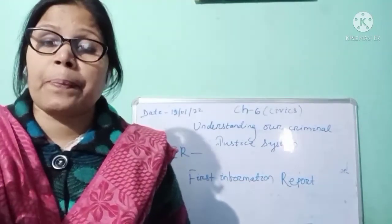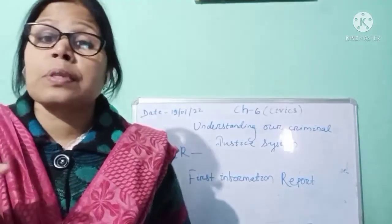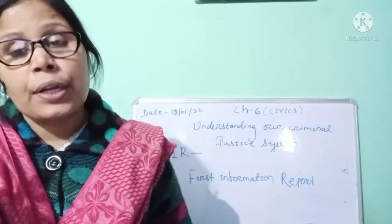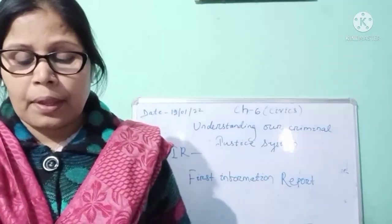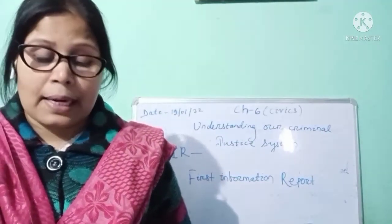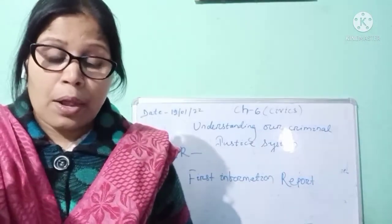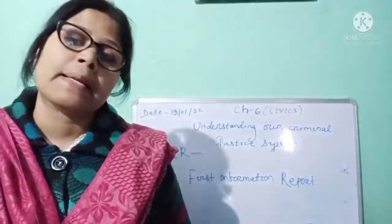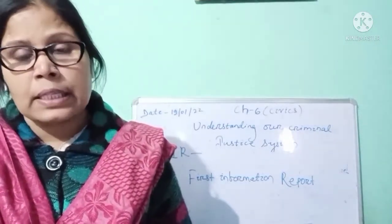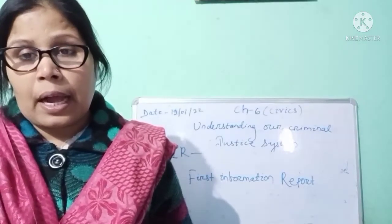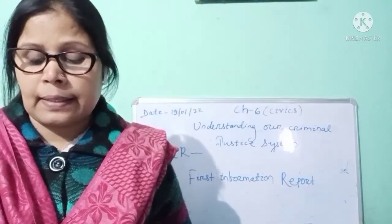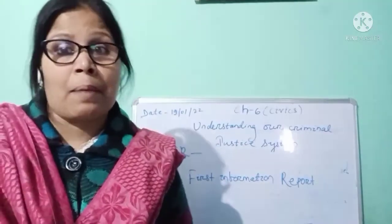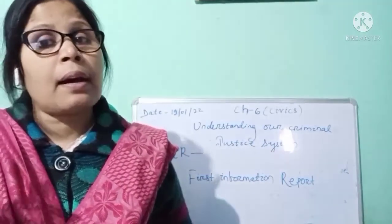The date, place, and time of any criminal activity are mentioned in the FIR. It also includes the details of the basic facts and a total description of events. If the identity of the accused person or a witness is known, that is also mentioned in the FIR.